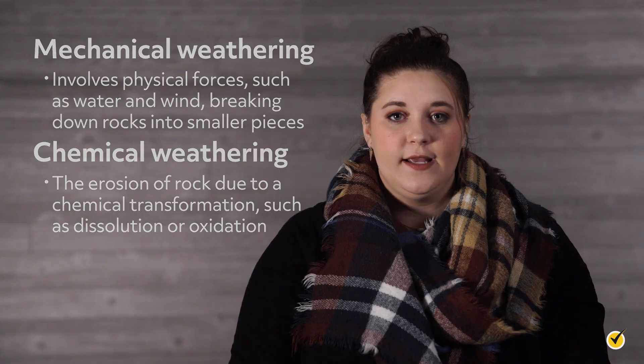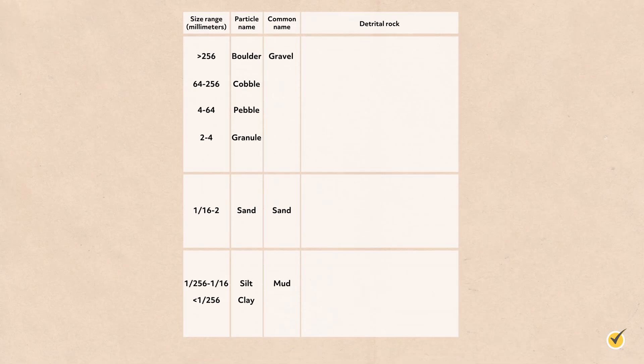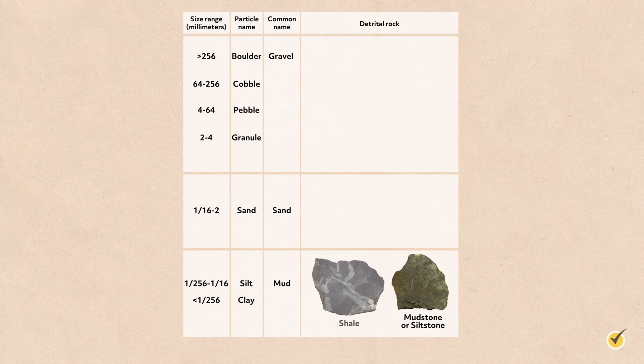There are three types of sedimentary rocks: detrital, chemical, and organic. Detrital sedimentary rocks form from sediments that have been weathered and transported. Particle size is mostly used to distinguish among these different rock types. For example, shale, a sedimentary rock, has very small silt and clay-sized particles, which are barely visible to the human eye.